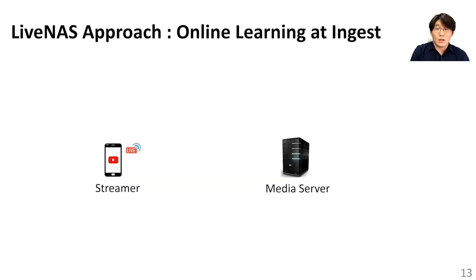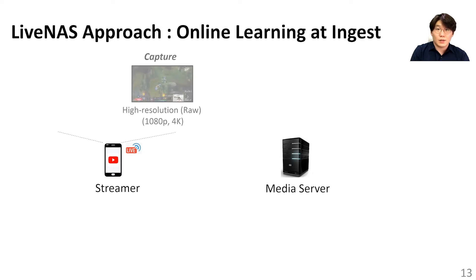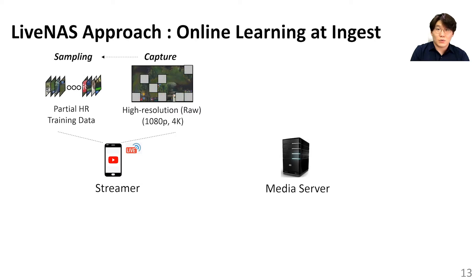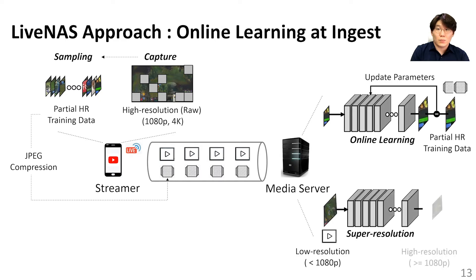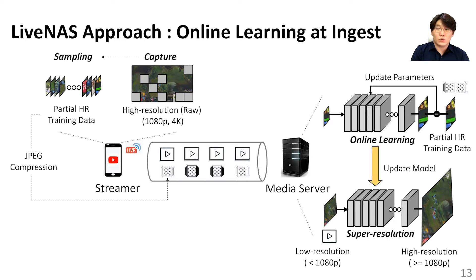To explain in detail, LiveNAS operates both at the streamer and the server side. At the streamer side, the camera captures the high-quality stream before its compression, and LiveNAS samples partial high-resolution data used for training. Then the streamer sends the sampled training data patches along with the compressed live video frames. At the media server, the online training and super-resolution inference operate in parallel. The online training learns new features of the video stream online with received patches from the streamer and updates the freshly trained DNN to the super-resolution processor.